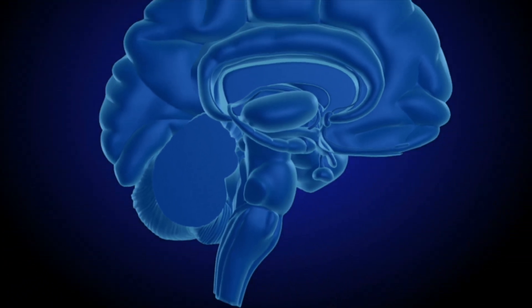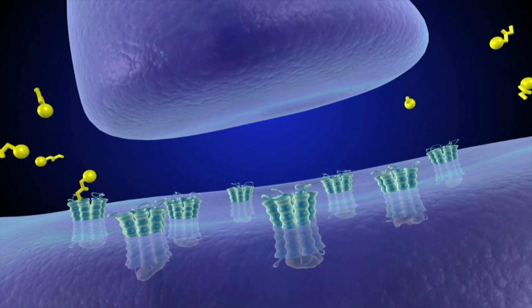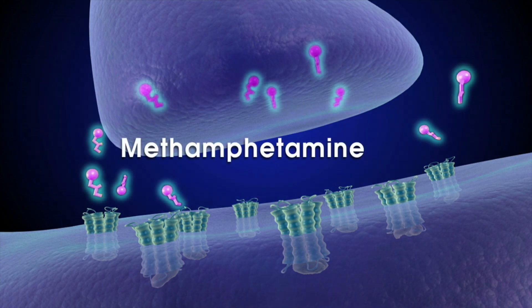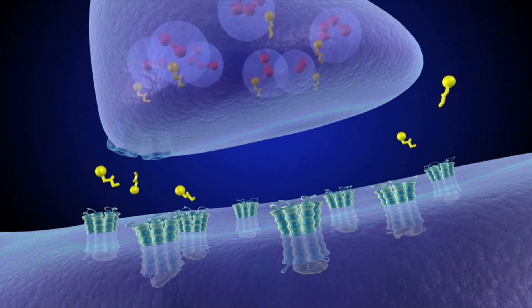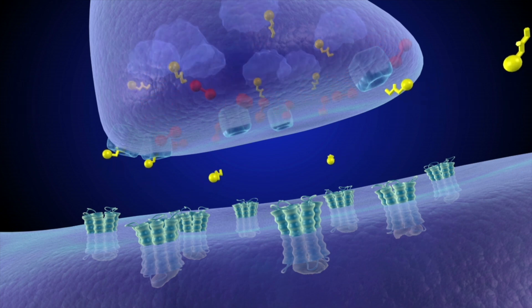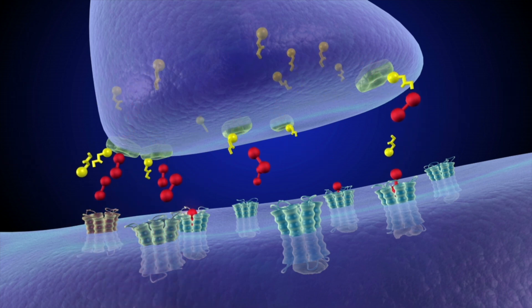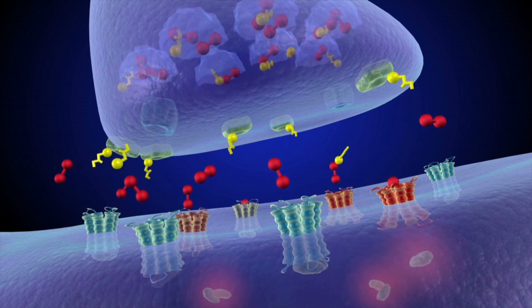However, drugs are able to hijack this process, contributing to unhealthy behaviors and consequences. When someone first uses methamphetamine, the drug quickly enters the brain. At low doses, meth blocks the re-entry of dopamine into the presynaptic cell, just like cocaine does. But unlike cocaine, higher doses of meth can increase the release of dopamine from the cell.